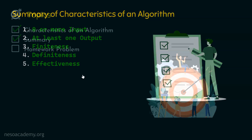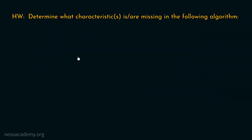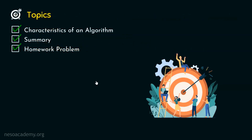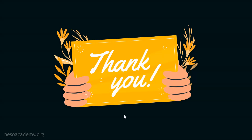Now let's move to the homework problem of this lecture. Determine what characteristic or characteristics are missing in the following algorithm. It might be possible that more than one characteristic is missing — you need to identify this on your own. Try solving this question and post your answers in the comment section. With this, we are done with this lecture. Thank you for watching this presentation — I will see you in the next one.